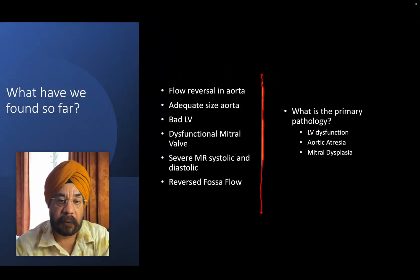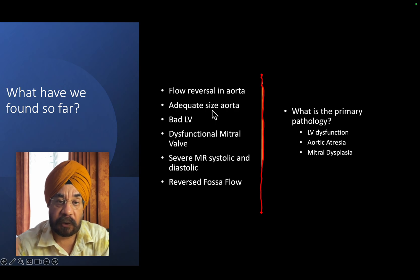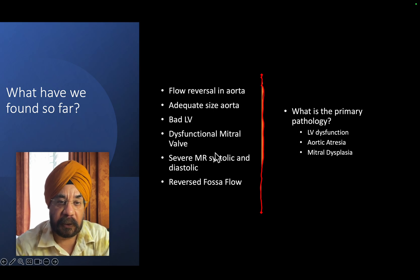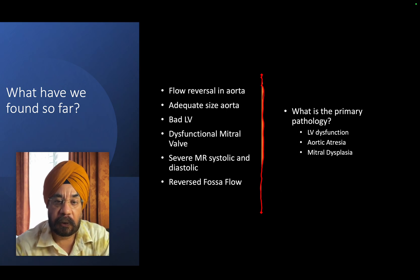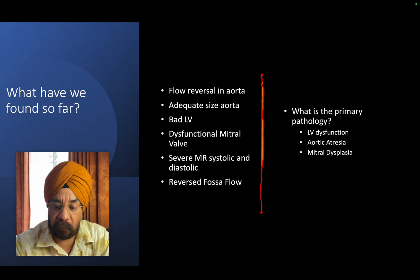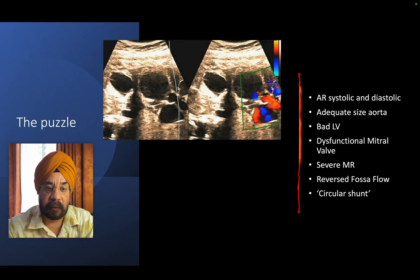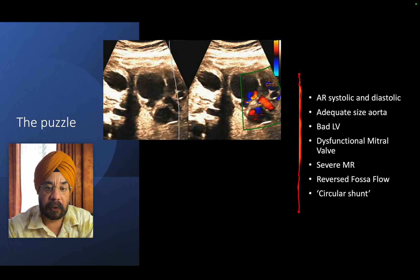We still do not know what the pathology is. What we have so far: flow reversal in the aorta, an adequate-sized aorta - which is difficult to explain - and a bad, dysfunctional LV. I would have expected that if the mitral valve is bad with no flow across it, the LV should be small. If the LV is bad and large, I expected the aorta to be small. Neither is happening. So is this LV dysfunction with aortic atresia? No - the aorta size is normal. Mitral dysplasia? LA size is normal. Something is going on somewhere.